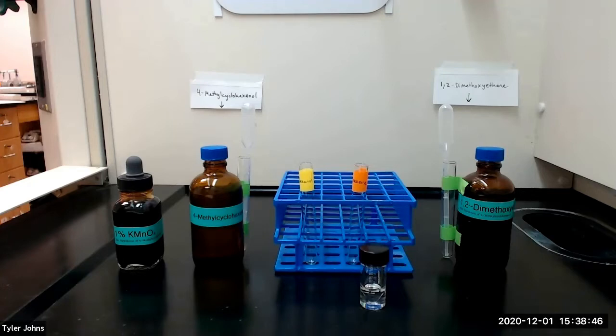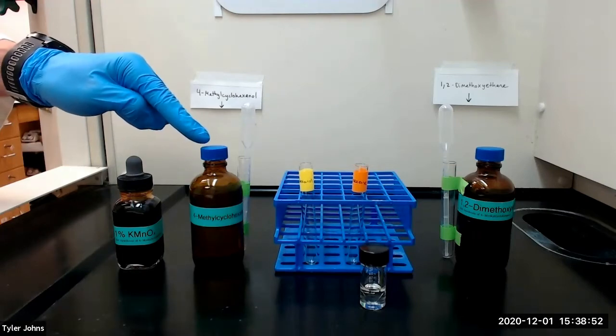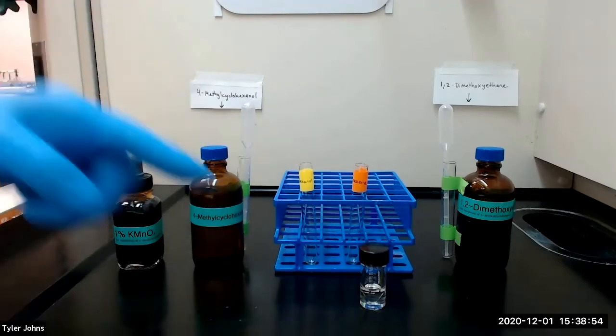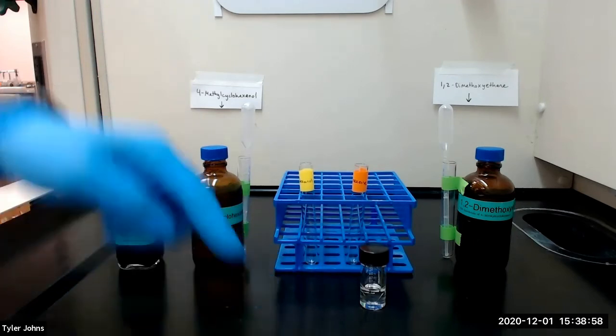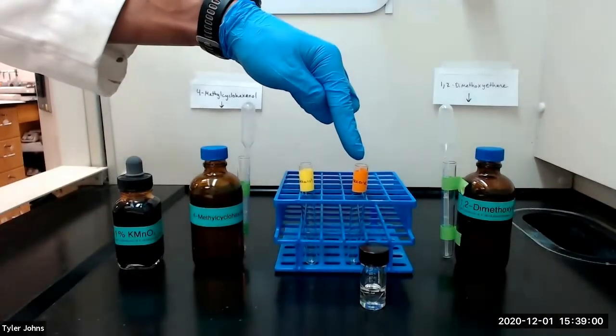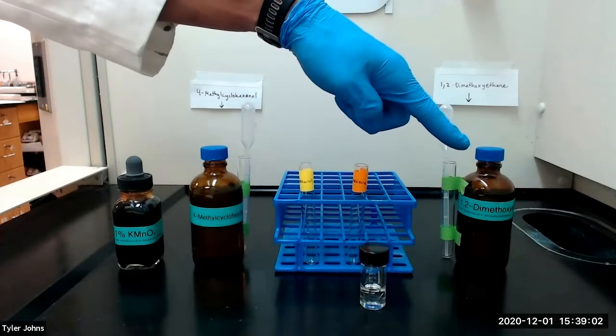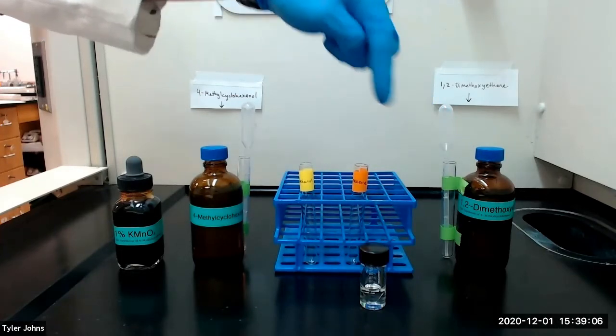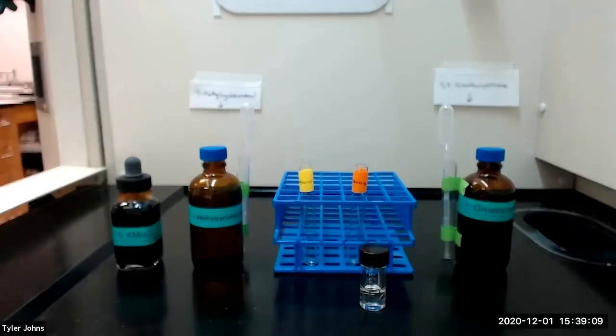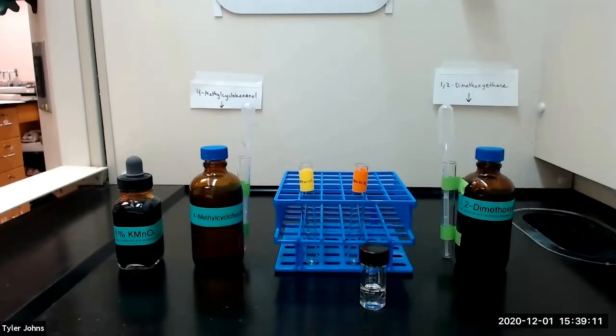We will now test the distillate for unsaturation using potassium permanganate. We will add 5 drops of 4-methyl cyclohexanol and 5 drops of the 4-methyl cyclohexene distillate to two separate test tubes. We will then add 0.3 milliliters of 1,2-dimethoxyethane to each test tube. The 1,2-dimethoxyethane allows the aqueous potassium permanganate to interact with the organic test compounds.